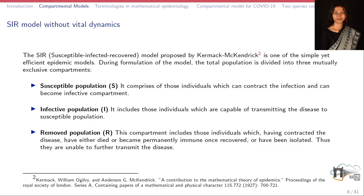The next standard model is the SIR model, also known as the Susceptible-Infected-Recovered model. It was proposed by Kermack and McKendrick and is one of the simplest yet very efficient epidemic models studied in mathematical epidemiology. In the SIR model, there are three compartments: S, I, and R. By S we mean susceptible population, I is the infected compartment, and R is the compartment consisting of the removed population.